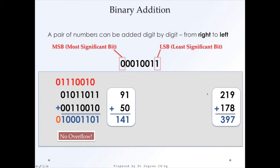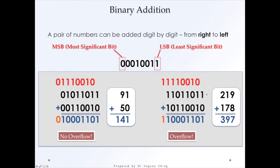Let's look at another example: 219 plus 178, which gives us an equivalent of 397. The binary equivalent is as such. Going through the addition: this is 1; this gives us a 0 with a 1 carry over; it gives us a 1 and a 1 with a carry over. This gives us 0, then 0 with a 1 carry over. And this is 1-1-1-1. Because of the three switched-on digits, we get a 1 carry over — and this is an overflow.